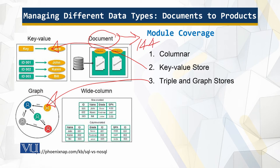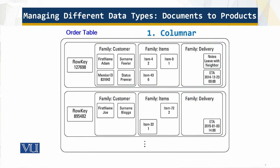Instead of storing data in a row for fast access, data is organized for fast column operations. This column-centric view makes column stores ideal for running aggregate functions. Each column store record — think of a row in an RDBMS environment — does not require a single value per column; multiple values are supported.